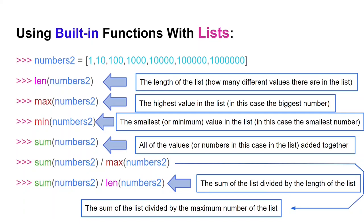Now let's look at using built-in functions with lists. I make a variable called 'numbers2' and assign it seven values: 1, 10, 100, 1000, 10000, 100000, and 1000000. 'len' gives the length — how many values are in the list. 'max' gives the highest value. 'min' gives the smallest value. 'sum' adds all values together. I also do calculations: sum divided by max, and sum divided by len.